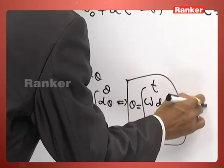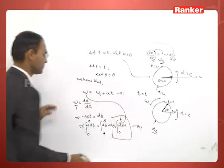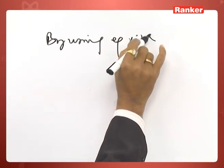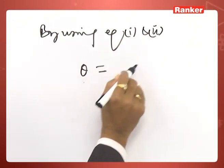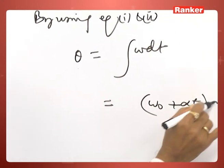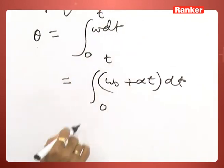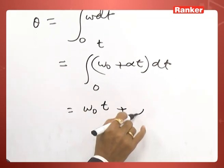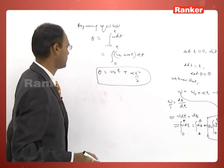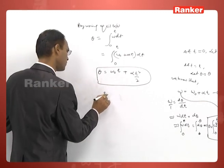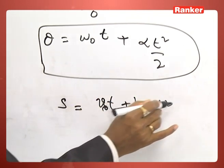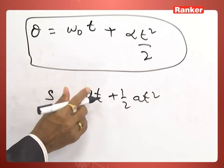This is equation 2. We insert omega from equation 1 into equation 2. Using equations 1 and 2, we obtain theta equal to the integral from 0 to t of (omega naught plus alpha t) dt, which gives omega naught t plus alpha t squared by 2. This is the expression for angular displacement, equivalent to s equal to v naught t plus half at squared in linear kinematics.